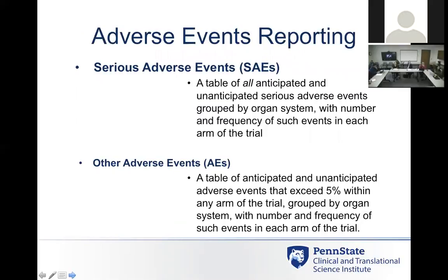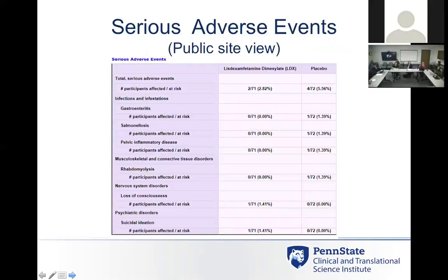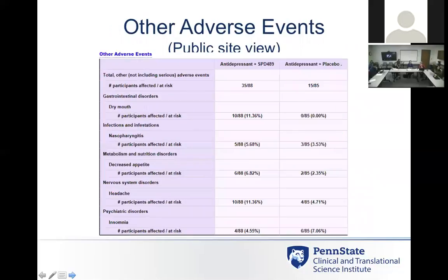Once you enter results and they're available for public view, this is the serious adverse events screen. It shows the percentage of subjects treated in both arms, broken down by body type or system type, with the event listed under its system class. For infections, three different serious adverse events fell under different types of infections. Then the other events section covers the same format for events that didn't meet the serious definition.